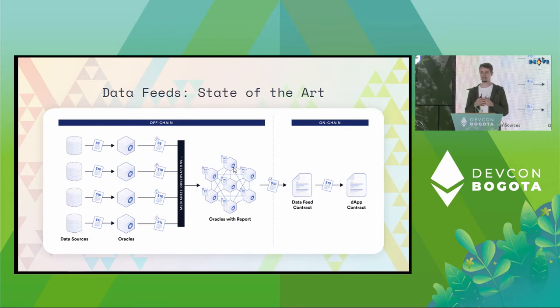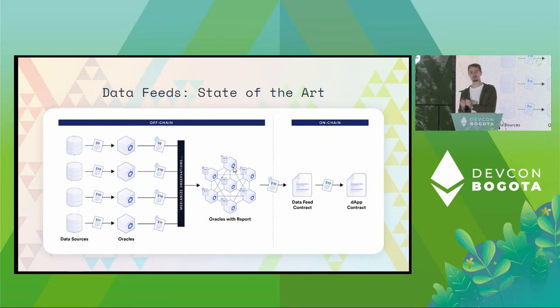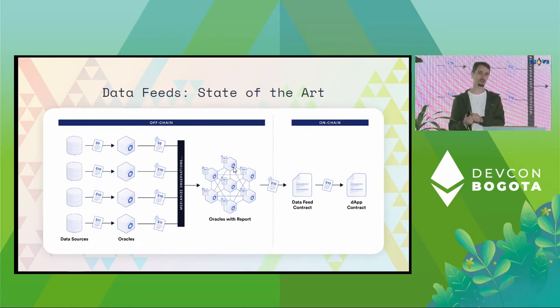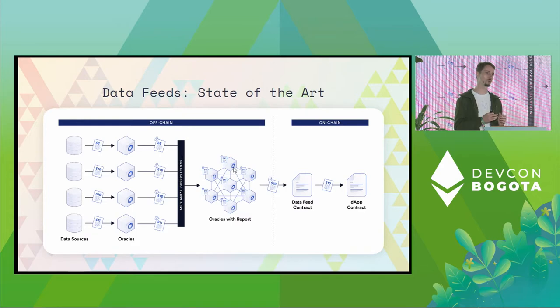The state of the art is to move as much work as possible off-chain. The less we need to touch the chain, the more efficient our system is going to be. But we'll want to do this in a way that preserves the security and reliability properties that we desire.